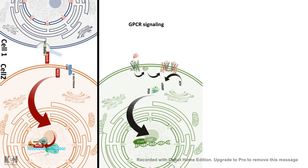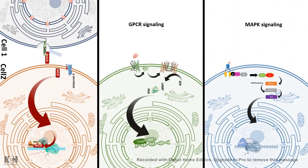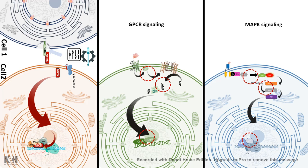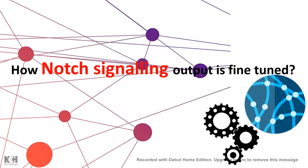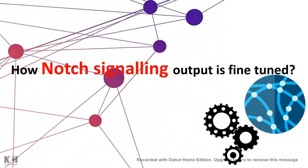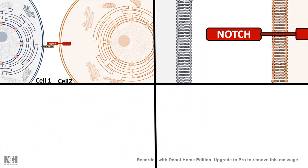If we compare Notch signaling with other signaling pathways like GPCR or MAP kinase signaling, we see a striking difference in modulability. GPCR and MAP kinase signaling have several steps at which there are opportunities to modulate or control the gain of the signaling. But in Notch signaling, the NICD directly migrates to the nucleus and gives rise to transcriptional changes — you might think it's not fine-tunable, but it turns out Notch signaling is heavily tuned and its gain can be controlled, just in a different way.